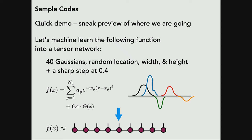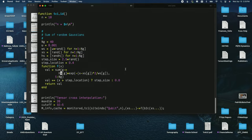Just to convince you this is real, let me give you a quick preview of the tensor cross interpolation algorithm and a demo of what it can do. You can give it some function — a piece of code for a pretty complicated function — and it can machine-learn it into a tensor network. Here's the function: 40 Gaussians at random locations, with random widths and heights that can be positive or negative, plus a sharp step at x equals 0.4.